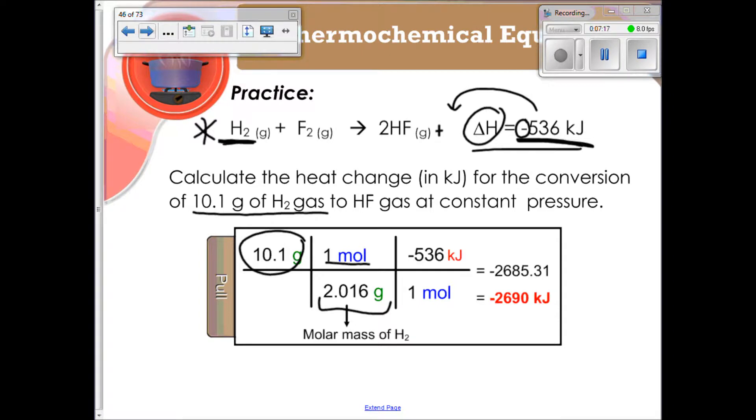So I put the negative 536 in here, work it out like stoichiometry, and you get negative 2690 kilojoules, and that's using significant figures. Let's look at this one. Go ahead and see if you can solve it using the strategy that we used on the previous slide.